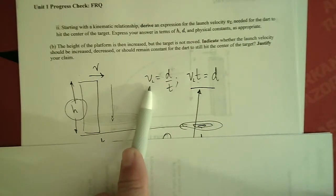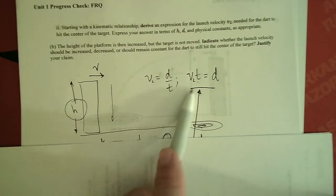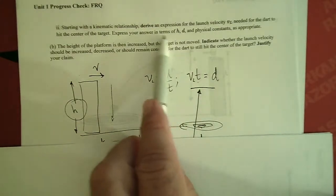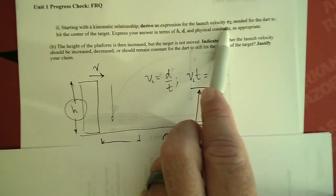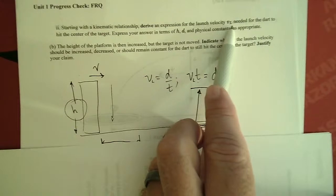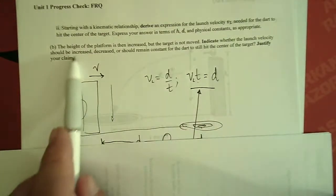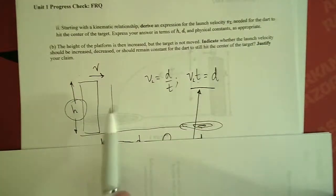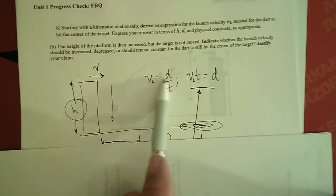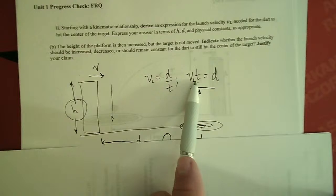So velocity L is distance over time, so velocity L times time is distance. That is what we are trying to find, is trying to derive an expression for the launch velocity, V sub L, needed for the dart to hit the center of the target. Express your answer in terms of H, D, and physical constants as appropriate. So launch velocity is distance over time, so launch velocity times time is distance. Well, time we do not know.